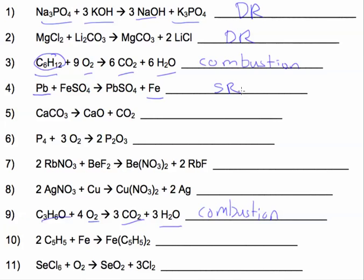Number five. Is this synthesis? No, there's two products. Is it decomposition? Yes, we have one reactant breaking down into two products. So we have decomposition. Number six. Is this synthesis? Yes, we have two things coming together to make one. And you probably can see that synthesis and decomposition are the opposites of each other.